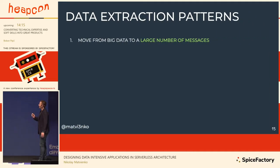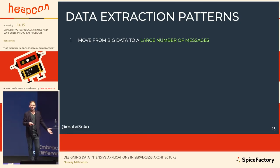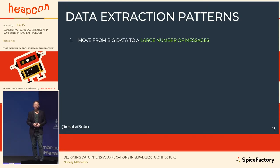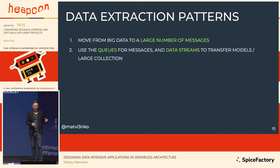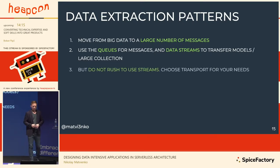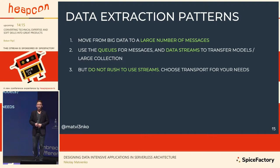To extract data, you need to move big data from the data lake or large numbers of messages from IoT devices. Use queues for messages and data streams for big models or large collections, because in a stream you can partition them like a train of data. Do not rush to use streams — they're expensive. Choose the transport for your needs.